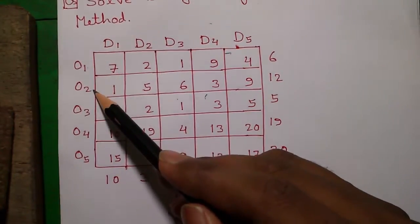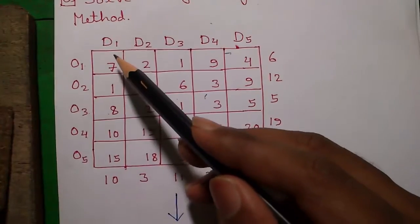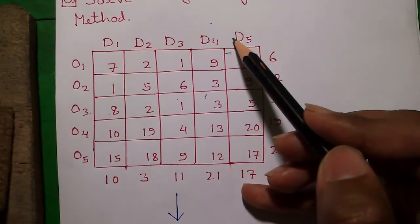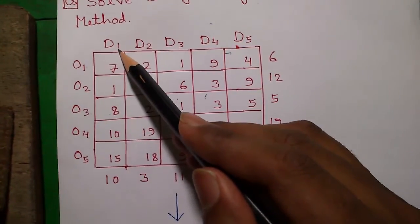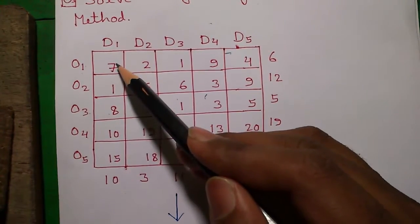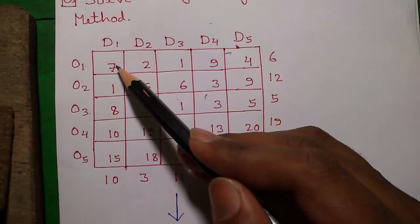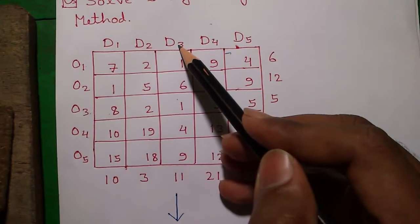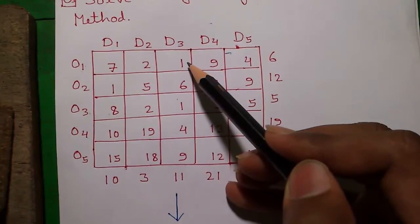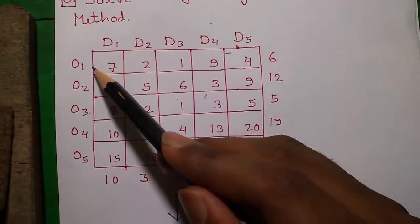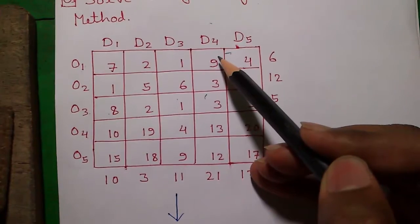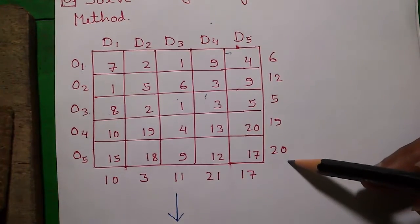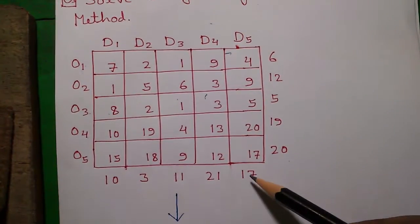We have 5 origins O1, O2, O3, O4, and O5, and 5 destinations D1, D2, D3, D4. If we transport 1 unit of goods from origin 1 to destination 1, our cost of transportation is 7 units — that may be 7 rupees or 7 dollars. But if we transport 1 unit of goods from origin 1 to destination 3, our cost reduces to 1. So our objective is to allocate goods from 5 origins to 5 destinations such that our total transportation cost is minimum. The outside values are the supply values and the demand values.